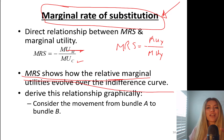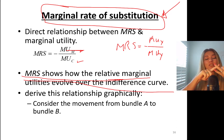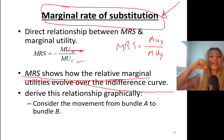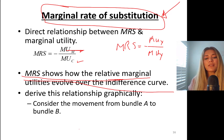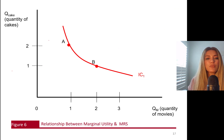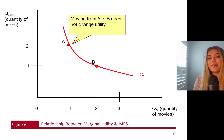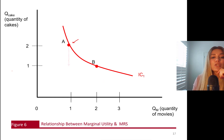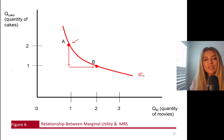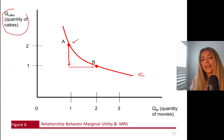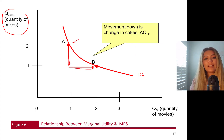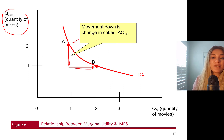Let's derive this relationship graphically and mathematically. Consider a movement from bundle A to bundle B. Moving from A to B does not change your utility — on both A and B you have the same level of happiness. As you move from A to B, you make two movements: you are decreasing your cake consumption, and you are increasing your movie consumption.